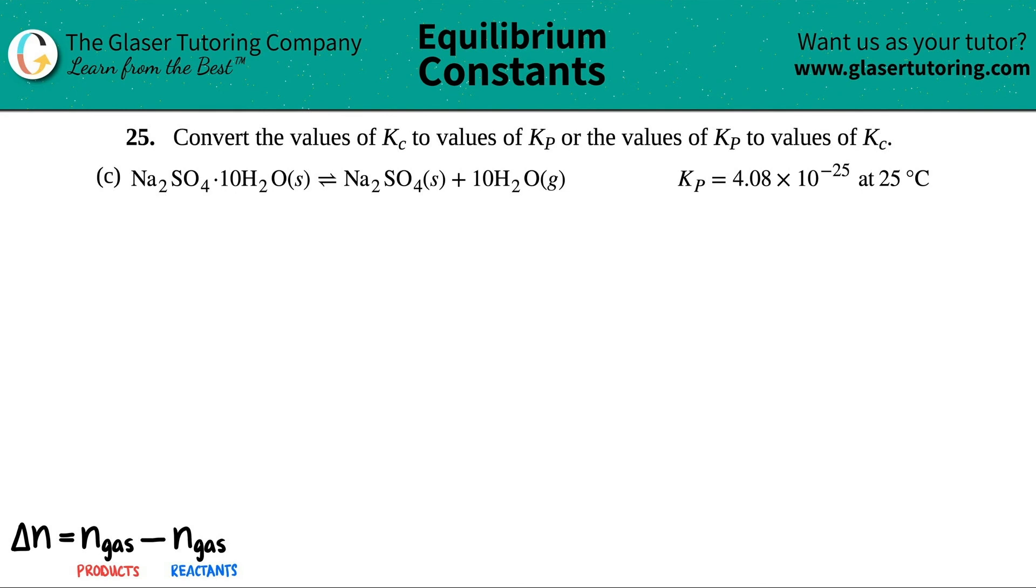Number 25. Convert the values of Kc to values of Kp or the values of Kp to values of Kc. And then we have this balanced equation over here with the respective Kp value. So I'm going to rewrite this a little bit bigger so that we could work with it. I have Na2SO4·10H2O, this is all a hydrate and it's a solid, but this comes to equilibrium with Na2SO4, which is also a solid, plus 10H2O, and that's a gas.